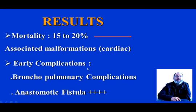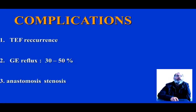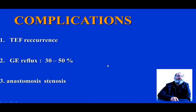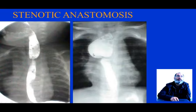For this first strategy, mortality is seen in 19 to 20% of cases, depending especially on associated malformations, particularly cardiac. Early complications include bronchopulmonary complications and anastomotic fistula. Late complications include tracheoesophageal recurrence, as seen in this case, gastroesophageal reflux, and stenotic anastomosis, as shown in this example.